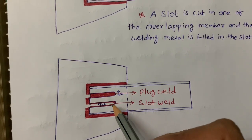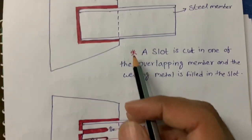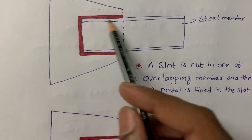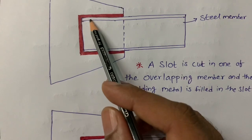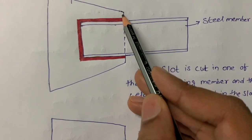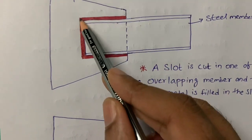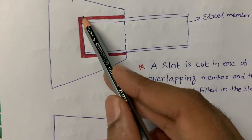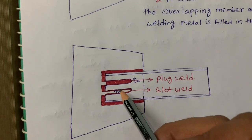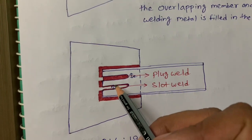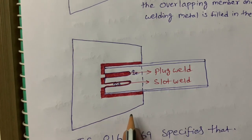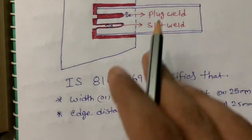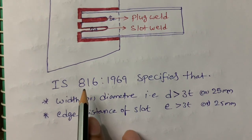The condition where we apply this is when the overlap length of the member is limited — that length is fixed. At that case we need to apply slot weld or plug weld.